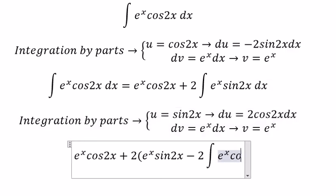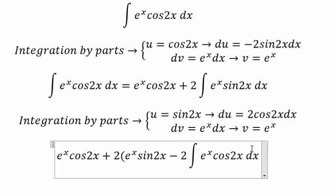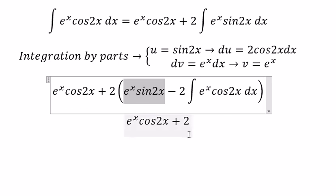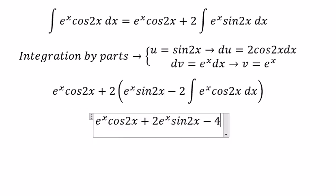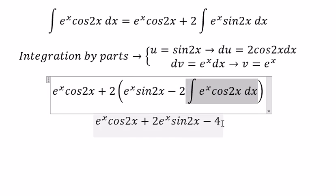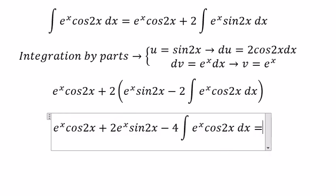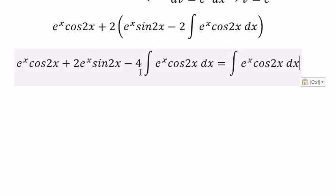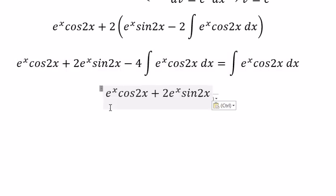We have 2 multiplied with these terms. This equals this, so we move the negative 4 to the right side, and we get 5 times the integral of e^x cos2x dx.